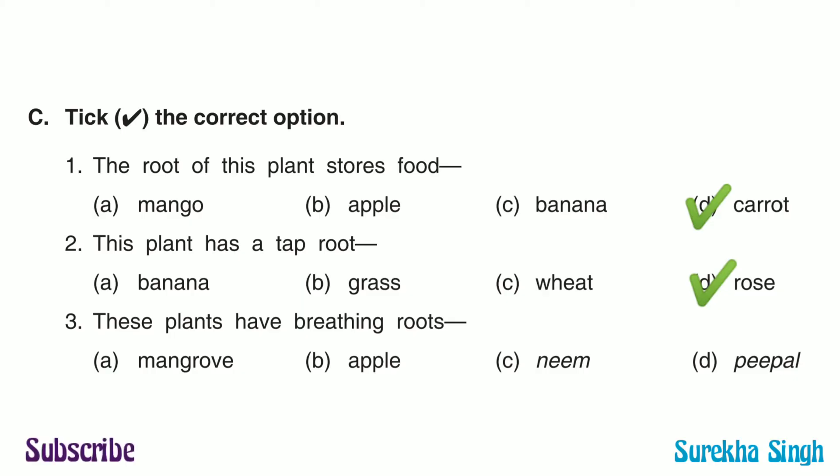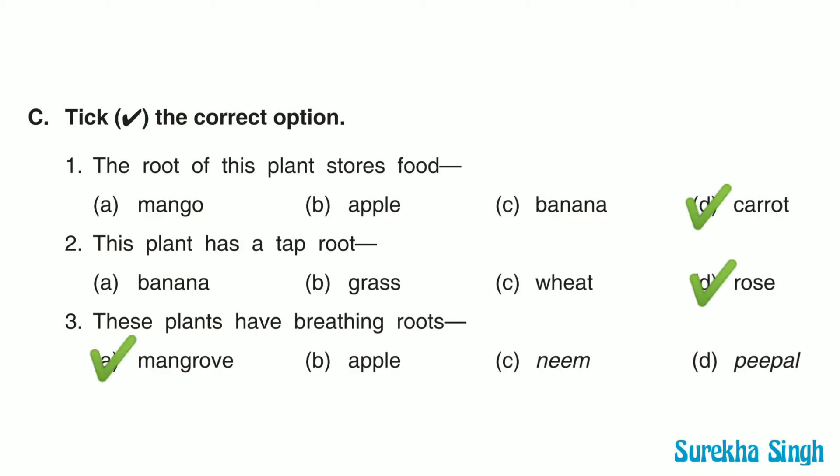3. These plants have aerial roots. Option A: Mangrove. Option B: Apple. Option C: Neem. Option D: Peepal. Here option A is correct. Mangrove plants have aerial roots.